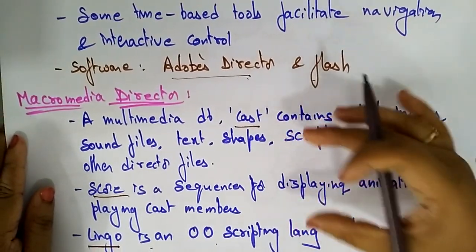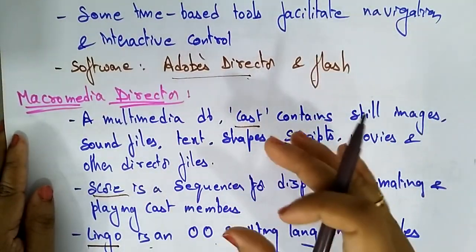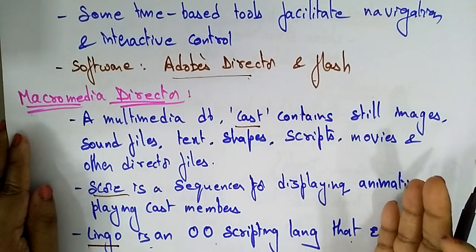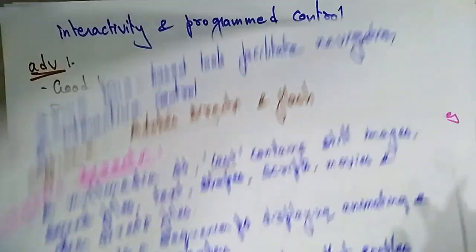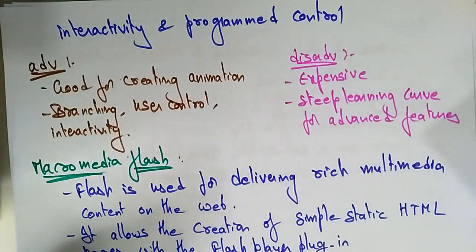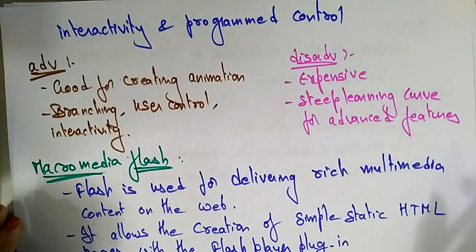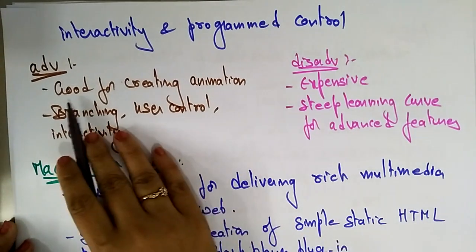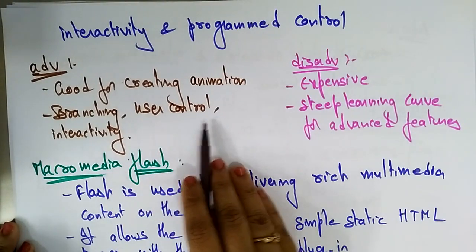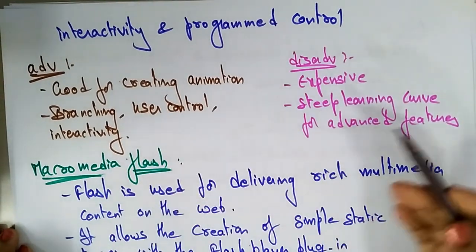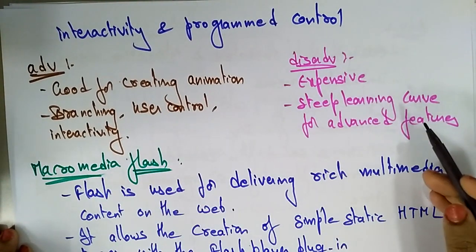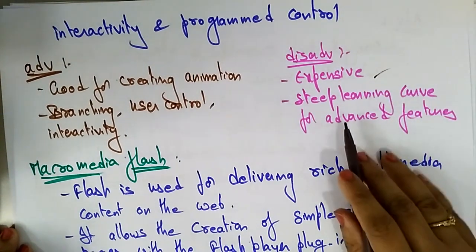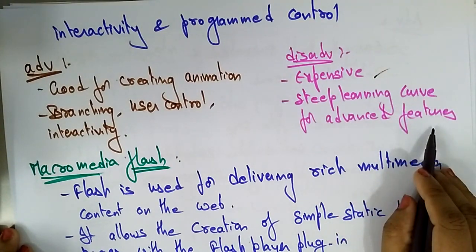So the three components present in Adobe Director as a time-based tool are Cast, Score, and Lingo. The advantages of using Macromedia Director are that it is good for creating animations, branching user controls, and interactivity. The disadvantages are that it is expensive and has a steep learning curve for advanced features.